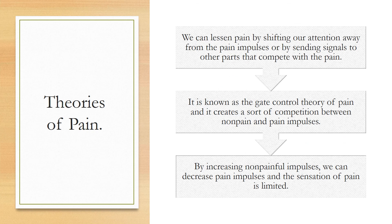We can lessen pain by shifting our attention away from pain impulses by sending competing signals. For example, when you stub your toe and rub it, you're not eliminating the pain but decreasing it — your brain focuses on the rubbing sensation instead. This is known as the gate control theory of pain: it creates a competition between non-pain and pain impulses. By increasing non-painful impulses, we can decrease pain impulses and limit the sensation of pain.